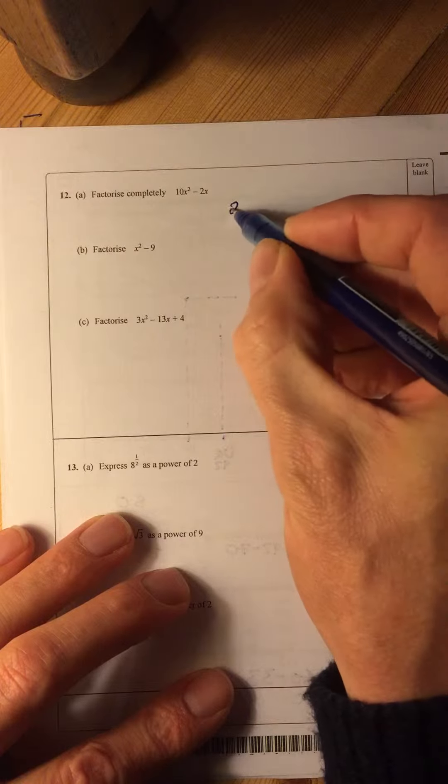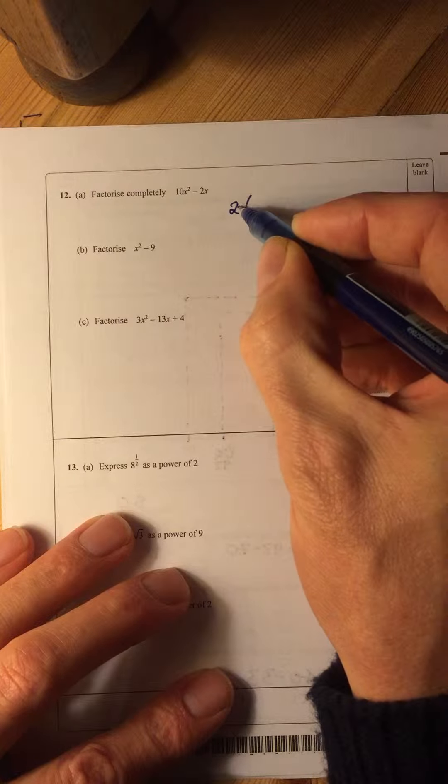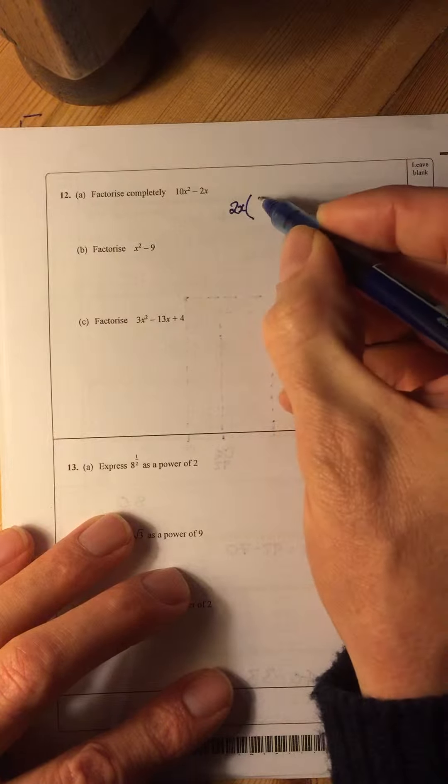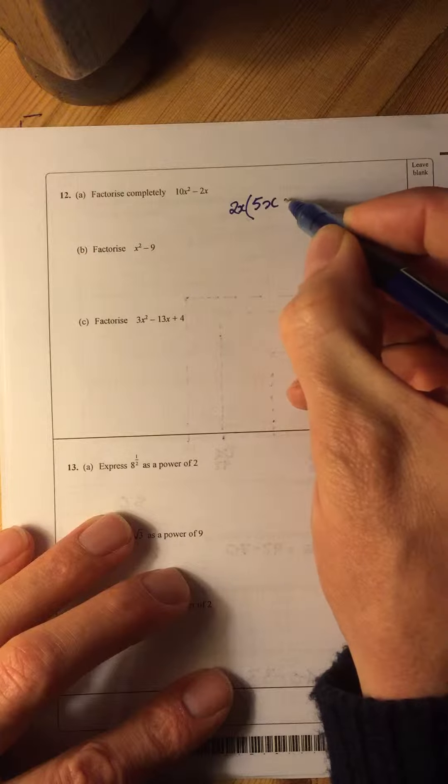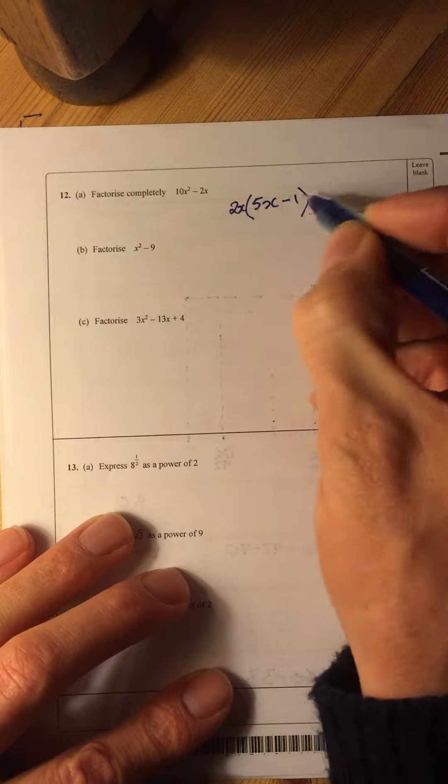So 2 is our number, but we can also take an x, so 2x. And we've got 5x and minus 1, 1 times 2x.